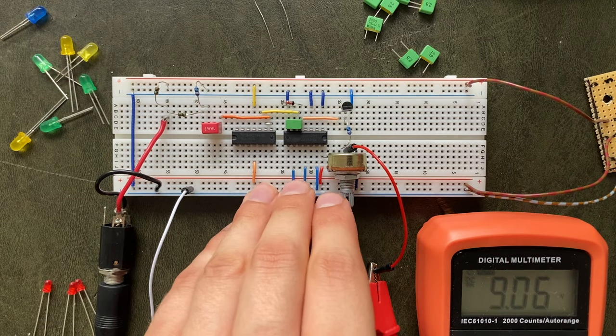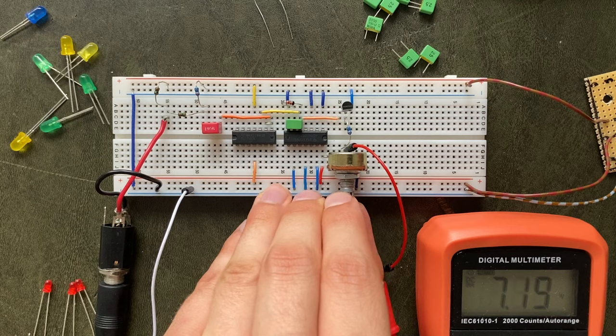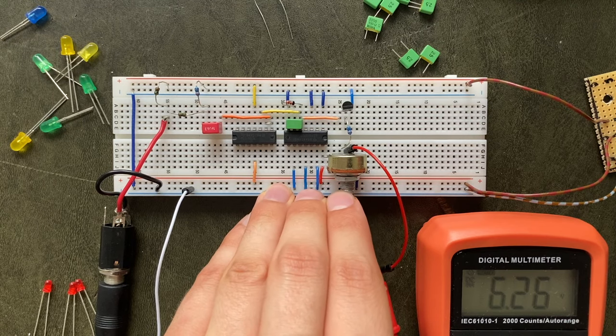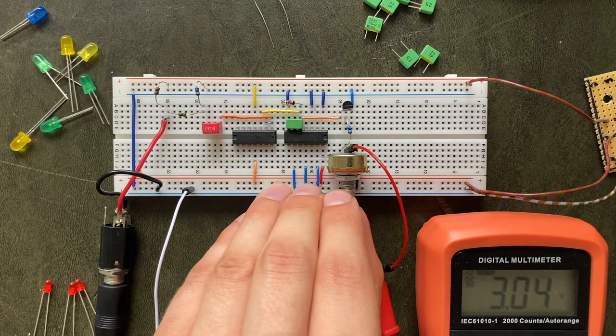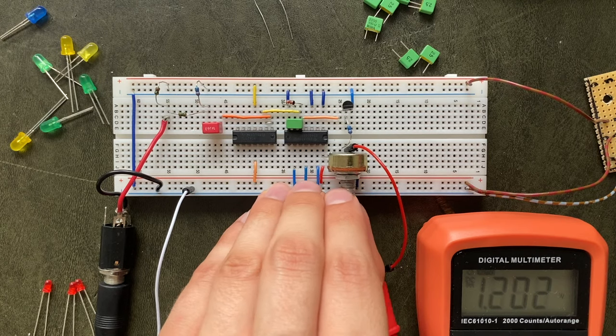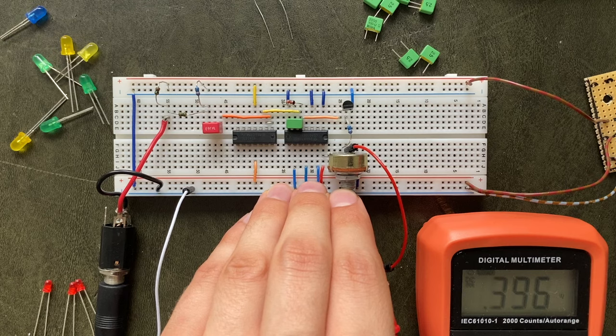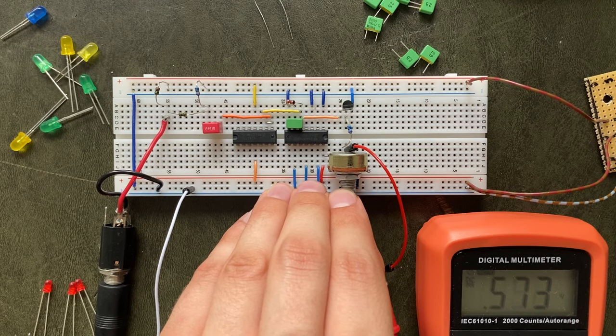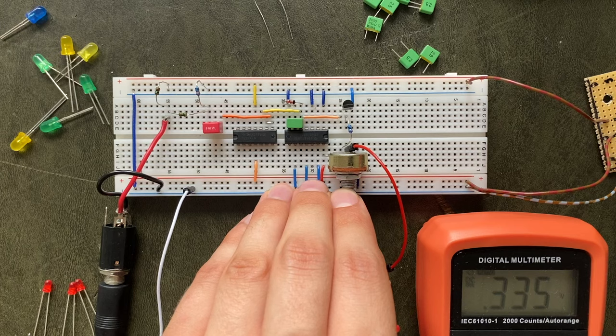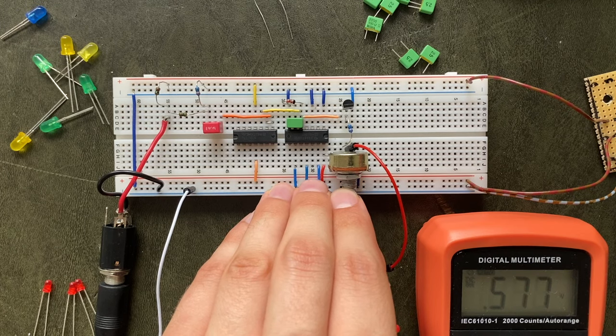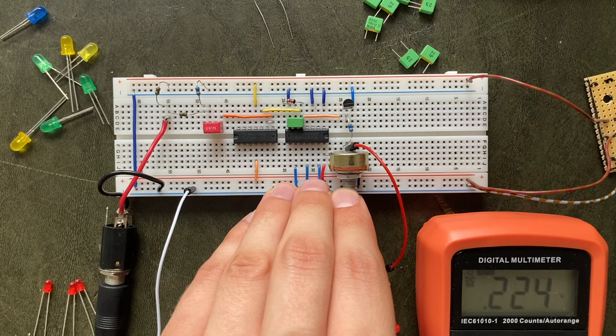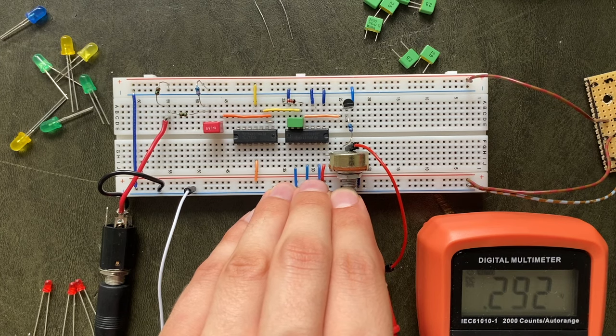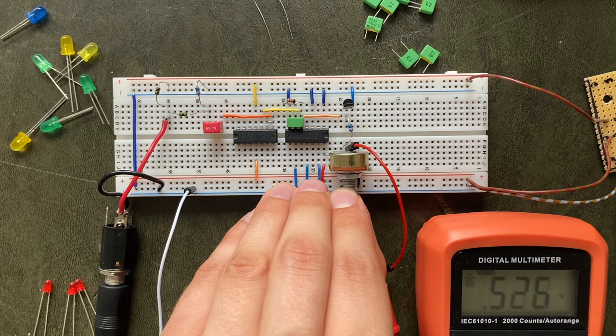As you can hear, our oscillator is completely dead in the upper voltage range. That's because the transistor is way too open there. But as soon as I get down to about 550 millivolts, it suddenly starts oscillating. The knob is really finicky, but you can go from really high pitched down to just periodic clicks. And the range for that is between approximately 350 and 550 millivolts.